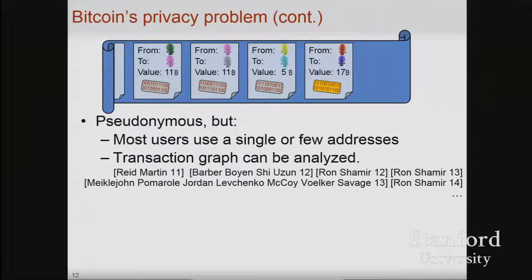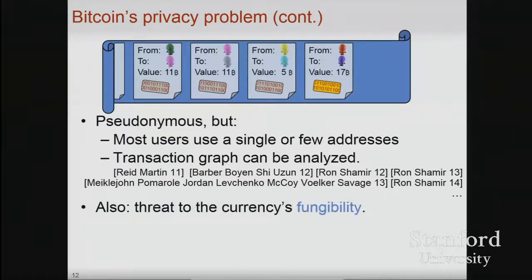Those familiar with Bitcoin might object that it's pseudonyms, not real names, on the ledger. But in practice, most users use few addresses and are easy to track, and there are numerous works showing how the transaction graph can be analyzed to extract information. It's also a risk to the fungibility of the currency — the fact that coins can be distinguished and their history told means they may be assigned different values, undermining a fundamental tenet of currencies.